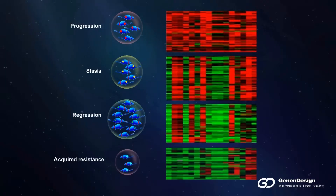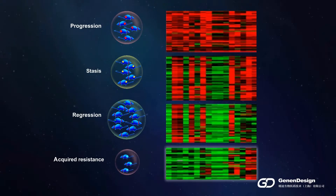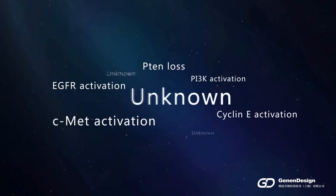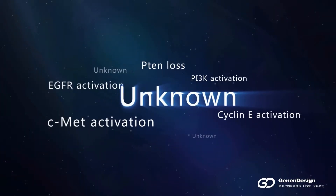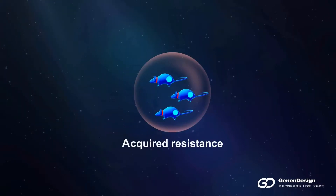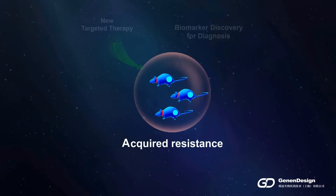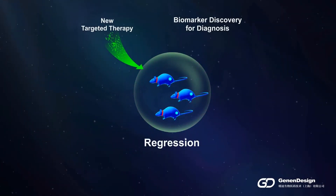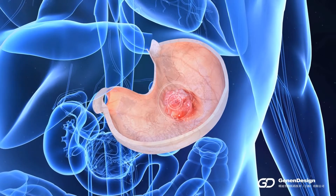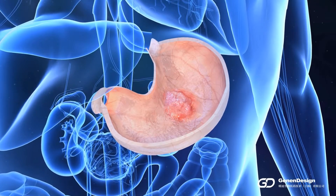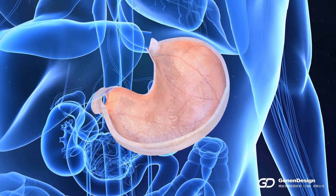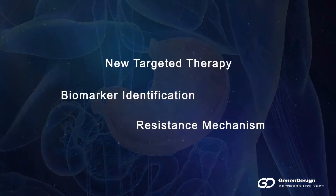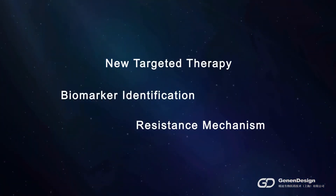Through genomic comparison of different response groups, we will be able to better understand the underlying drug resistance mechanisms. We can also use the information from bioinformatic analysis to discover drug resistance targets for developing new targeted therapies or combination therapies, or to discover biomarkers for diagnosis.